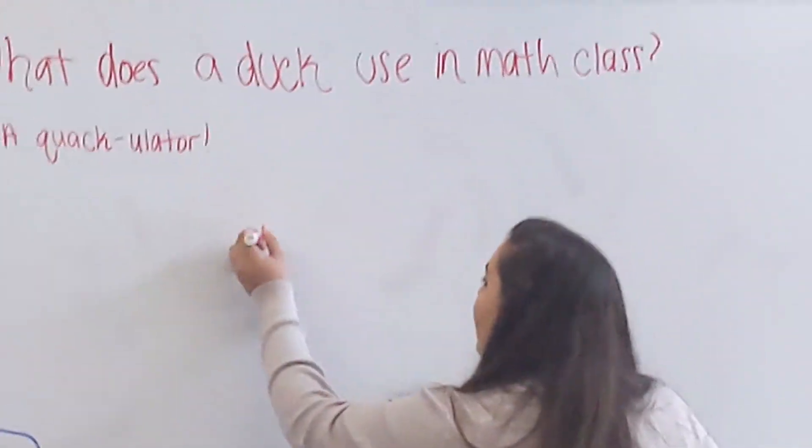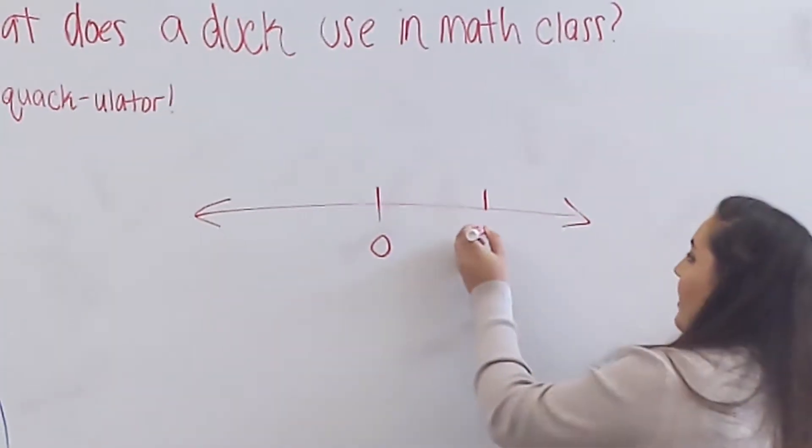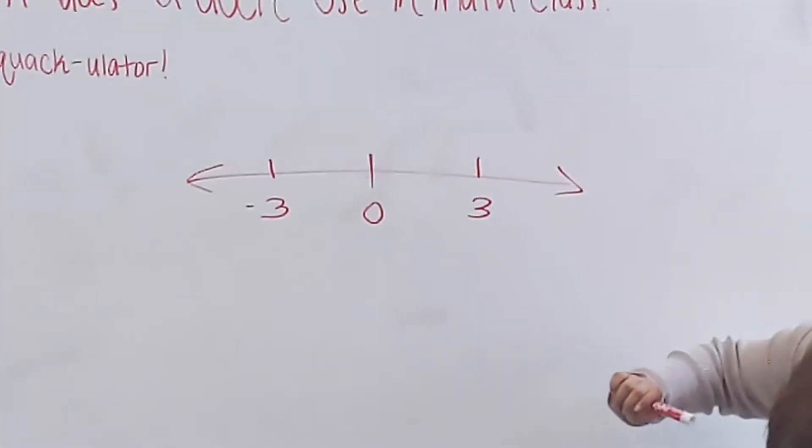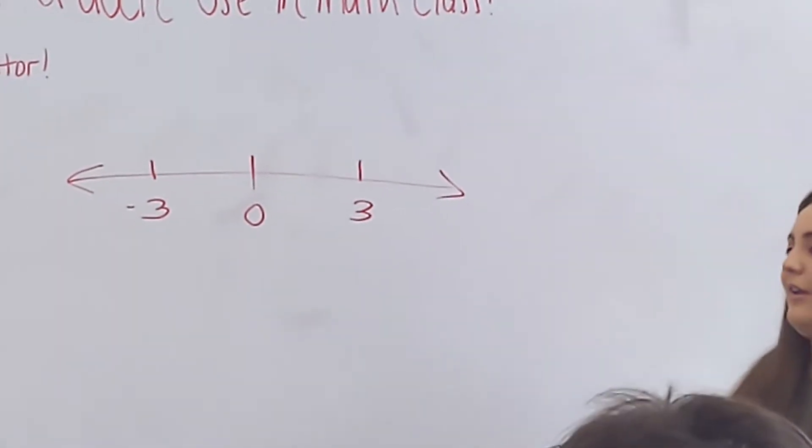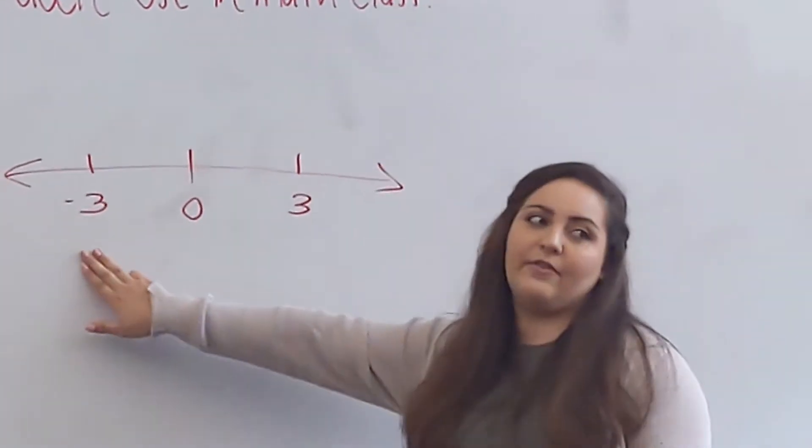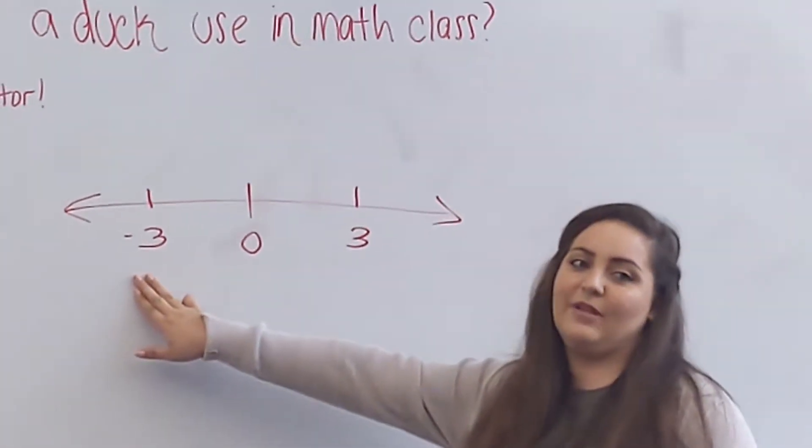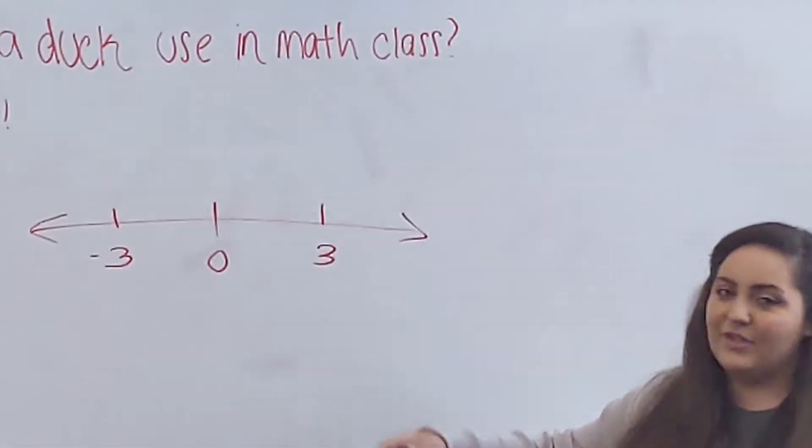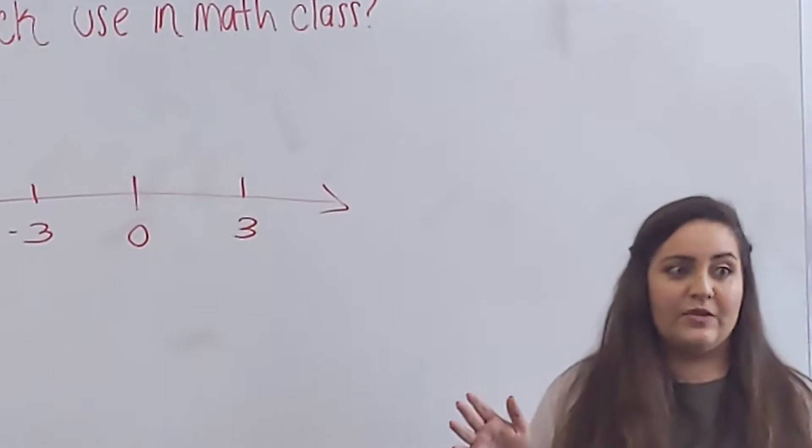So what does that mean? If we have a number line, zero's right here. We have three, we have negative three. What would the absolute value of three be? Eva? Three. Why? What about the absolute value for negative three? Angel, what's the absolute value of negative three? So it's three away from zero, you're right. In other words, guys, whenever you have an absolute value, no matter what, it's always going to be a positive number. The answer is always going to be positive.